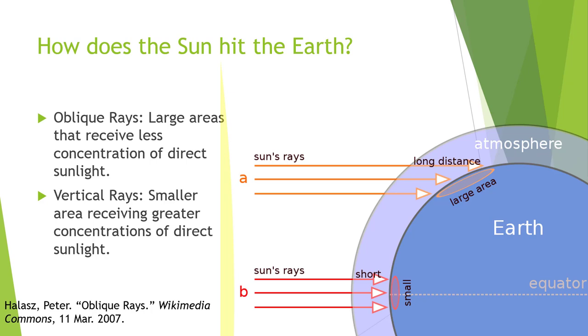The best way to understand it is with a flashlight. Take a flashlight and shine it on a ball — you're going to see what oblique rays and vertical rays are.